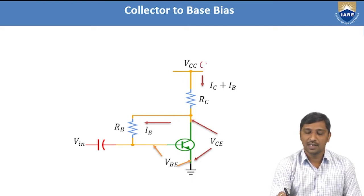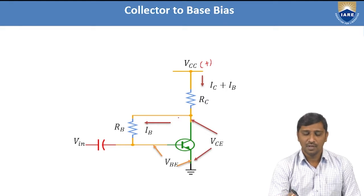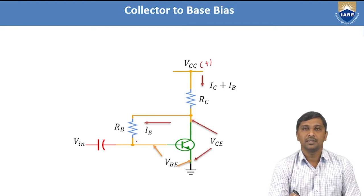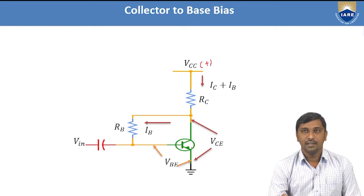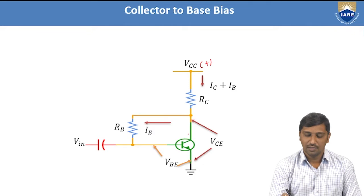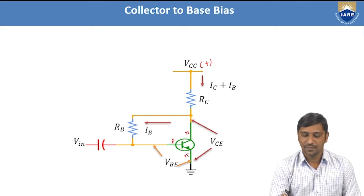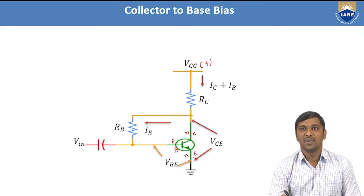The VCC polarity is considered positive. While making this biasing configuration, we need to ensure that the transistor operates in the active region — meaning the emitter-base junction should be forward biased and the collector-base junction should be reverse biased. Here I am considering an NPN transistor modeled in common emitter configuration. This is N-type material (collector), this is P-type material (base), and this is N-type material (emitter).